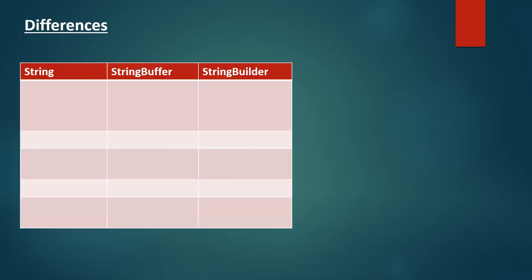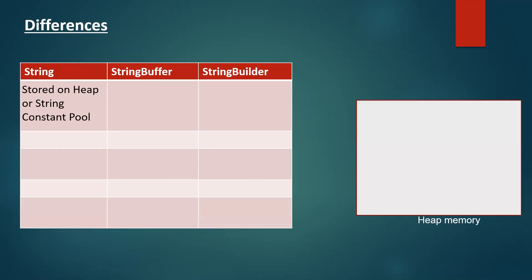Let's see the differences among String, StringBuffer, and StringBuilder. The first difference: String is stored on the heap or string constant pool. For example, a string literal like String s = "hello" is stored in the string constant pool within the heap memory. If the string is already present, it will be referenced; if it doesn't exist, it will be written into the string constant pool. If it is a string object, it will be stored in the heap memory.